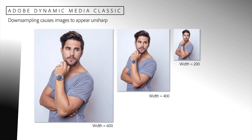In a typical production workflow, master images are prepared and uploaded to Dynamic Media Classic. Preparation may include such things as cropping, color correction, exposure, and sharpening. Dynamic Media Classic must generally downsample an image before sending it to be used in an experience. The downsampling process creates a loss of pixel data, causing an image to become unsharp. To compensate for this, we add sharpening to help recover the loss in image quality.